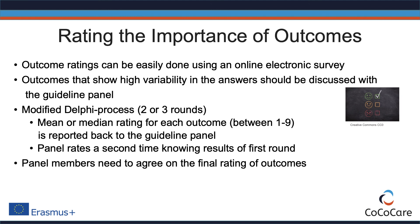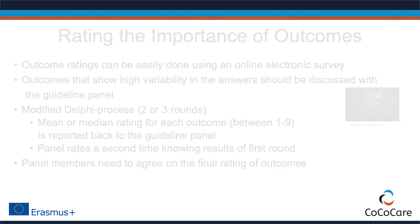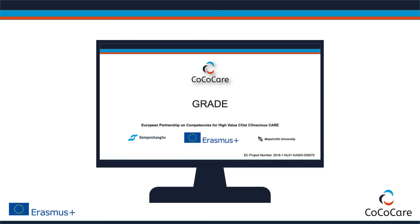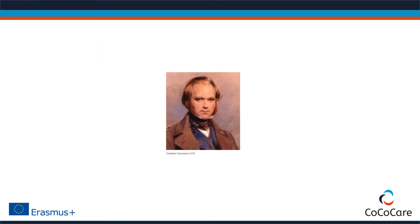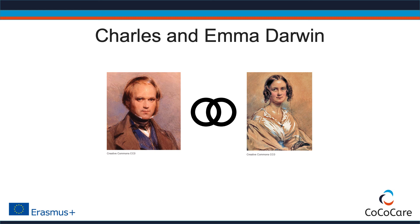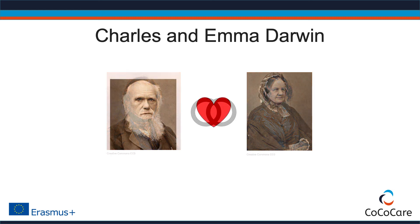The evidence on these outcomes will be summarized in systematic reviews and used for the GRADE process. If you want to learn more about GRADE, watch our slidecast on that topic. Coming back to Charles Darwin — the happy news is that, after weighing the advantages and disadvantages of marriage, he decided to propose to Emma. Emma accepted and they lived happily ever after and had ten children.